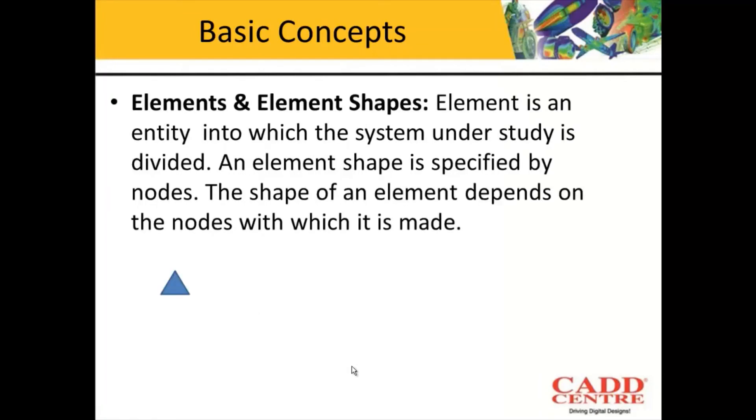The next important topic we are going to discuss is elements and element shapes. When we talk about FEA, the most important thing to understand is meshing. We will be discussing meshing in further chapters, but now we will discuss the factors on which meshing depends. There are five factors on which meshing depends and they